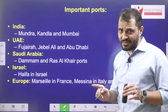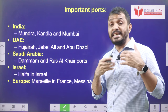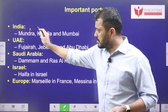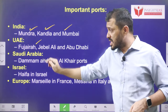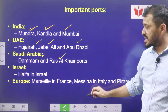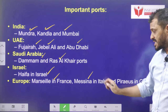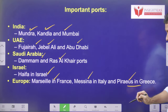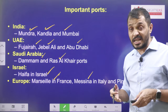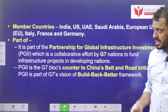Important ports which are going to be developed or are already developed and will take part in this project: from India — Mundra, Kandla, Mumbai; UAE — Fujairah, Jebel Ali, Abu Dhabi; Saudi Arabia — Dammam, Ras Al-Khair; Israel — Haifa; Europe — Marseille in France, Messina in Italy, and Piraeus in Greece. If you remember, Marseille is also a football team in France — if you watch Ligue 1, it is one of the premier football tournaments, you will find this team name there.